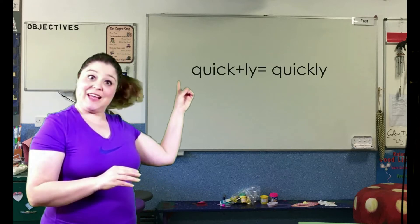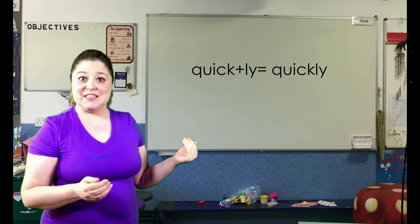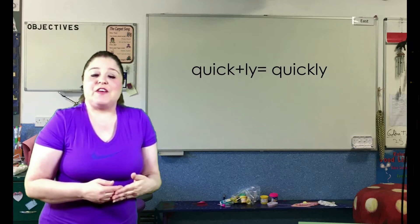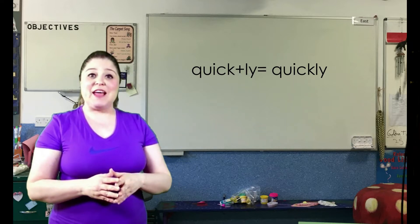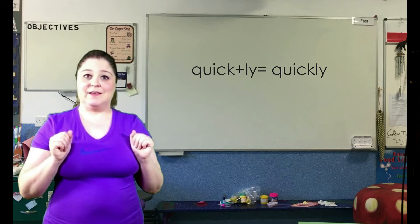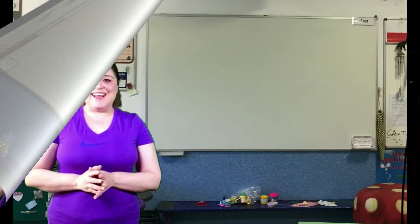Adverbs describe how things are done. We can very often make adverbs out of adjectives. We simply add the suffix ly to an adjective to make an adverb. For example, quick is an adjective. We add the suffix ly to make the word quickly.